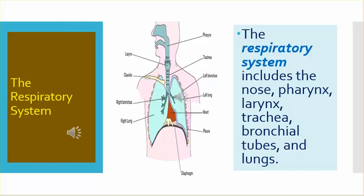The respiratory system includes the nose, pharynx, larynx, trachea, bronchial tubes, and lungs.